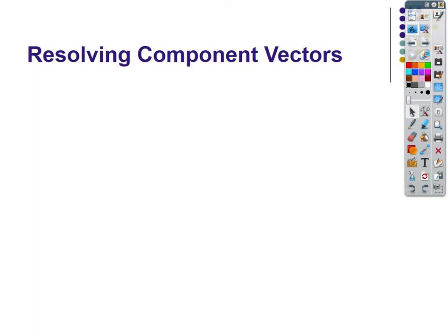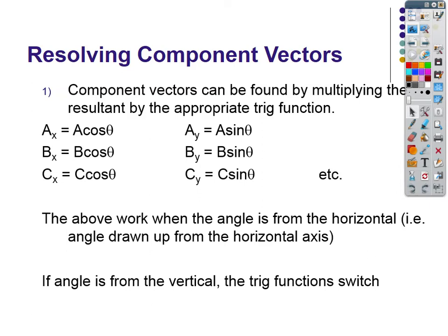To summarize resolving component vectors: most of the time, you can find each component by multiplying the resultant by the appropriate trig function. If the angle is from the horizontal, then ax = a·cos(θ) and ay = a·sin(θ). If the angle is from the vertical, everything switches. Just pay attention to which axis the angle is being measured from.